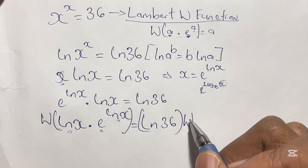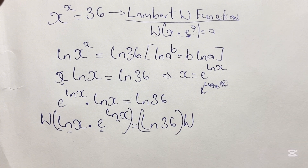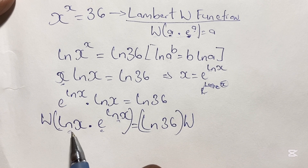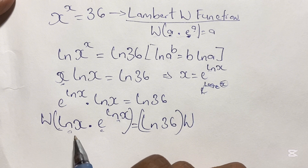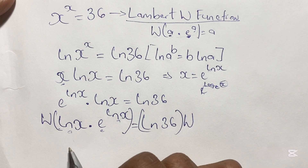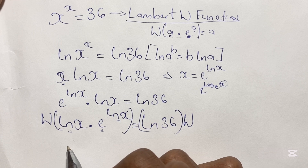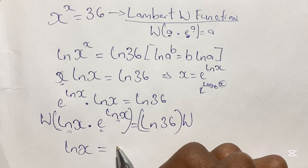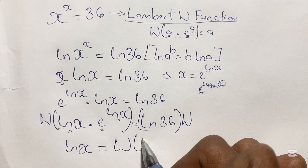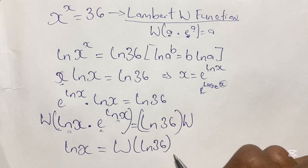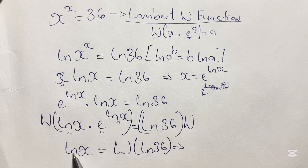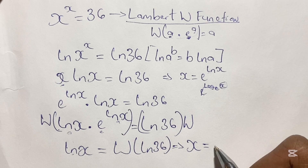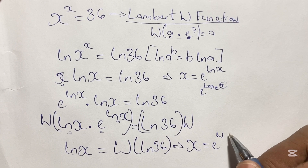With this understanding, if we apply a W function to a times e to the power of a, the result is just a, and in this case a is ln x. So this means we have ln x is equal to W of ln 36. From here we continue to solve for x by taking the inverse operation of ln, giving us x is equal to e to the power of W of ln 36.